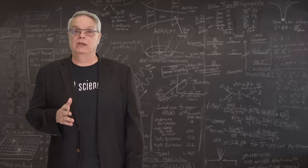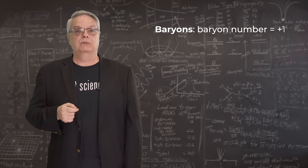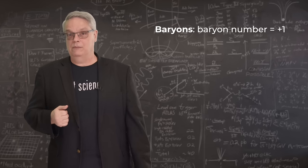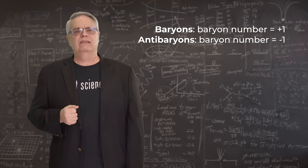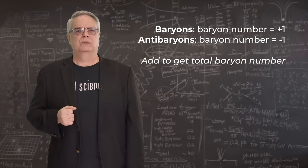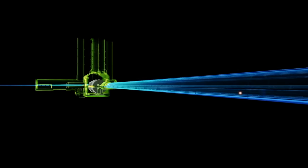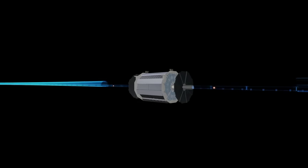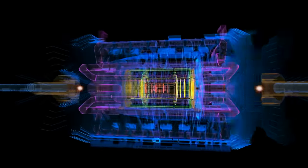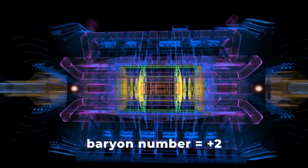Baryon number is simple. Every baryon has a baryon number of plus one. Antimatter baryons have a baryon number of minus one. And to find the total baryon number, you just add them up. For instance, at the LHC, when you smash two protons, each with a baryon number of plus one, the collision has a baryon number of plus two.